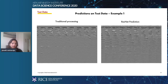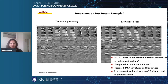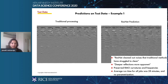This is an example from predictions on the test data. On the left, you're looking at the traditional processing workflow, and on the right, the ResNet prediction. ResNet cleaned out noises that traditional methods have struggled to clean. The deeper reflections are more apparent, the RMO curvatures and frequencies have been preserved, and the average runtime for all jobs was 28 minutes compared to a week typically taken for traditional processing.